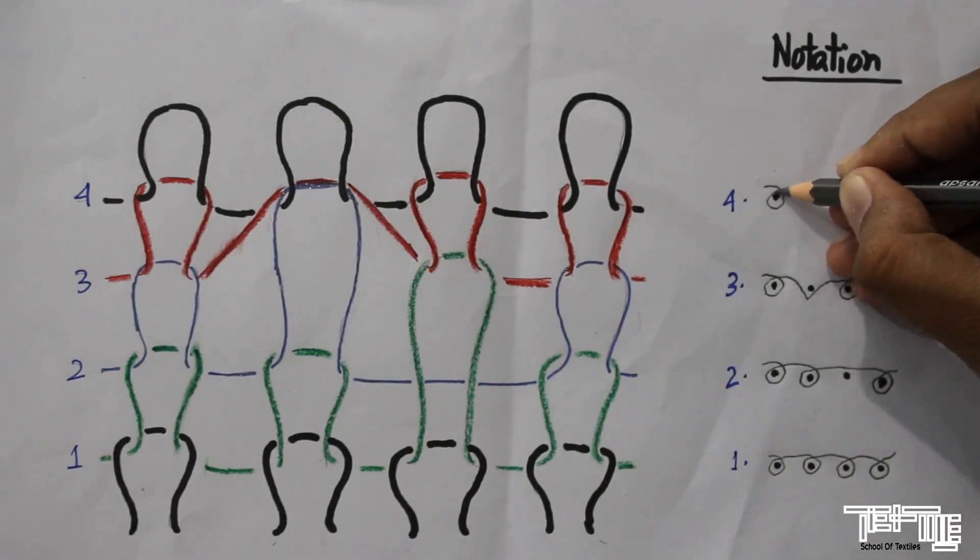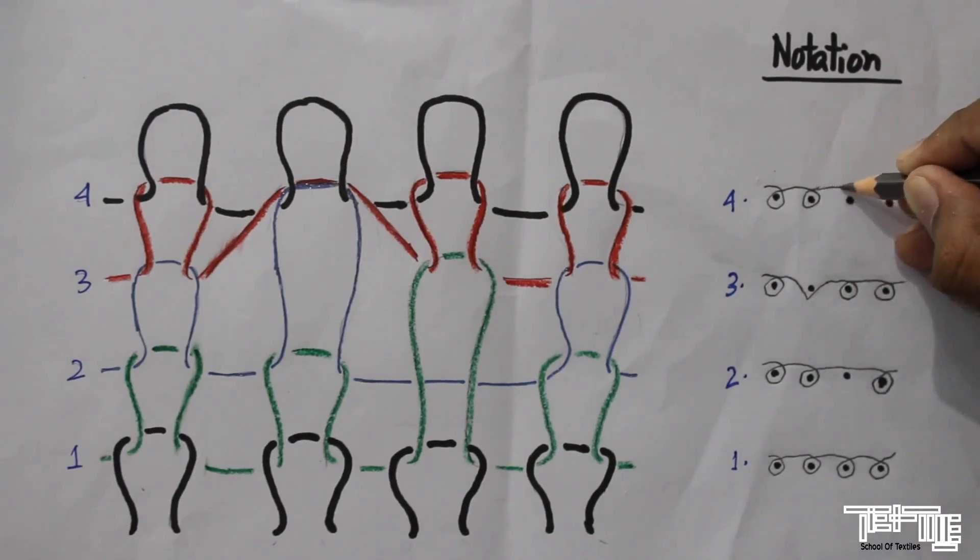In fourth course again there are knit loops. So knit, knit, knit, and knit.